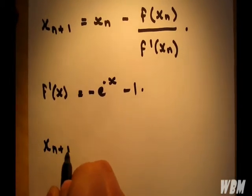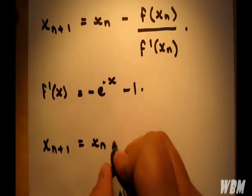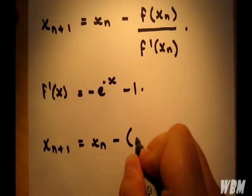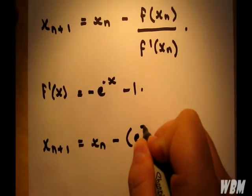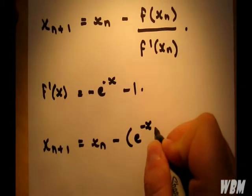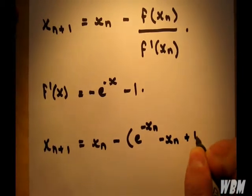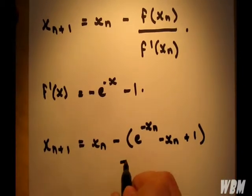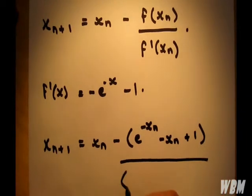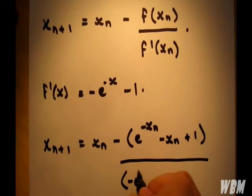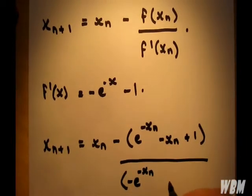x_(n+1) = x_n - [e^(-x_n) - x_n + 1] / [-e^(-x_n) - 1].